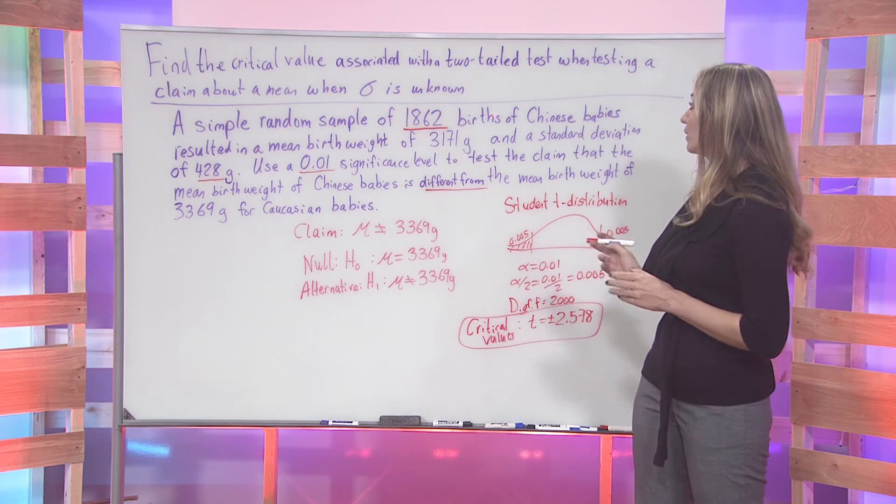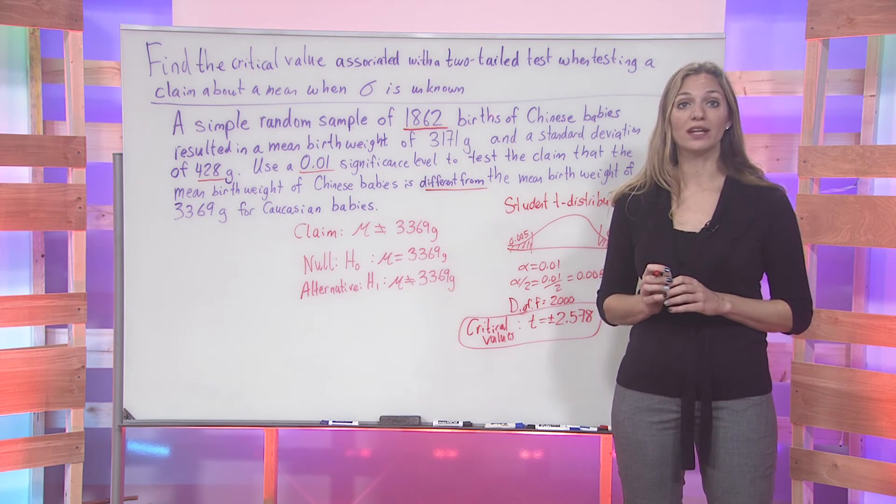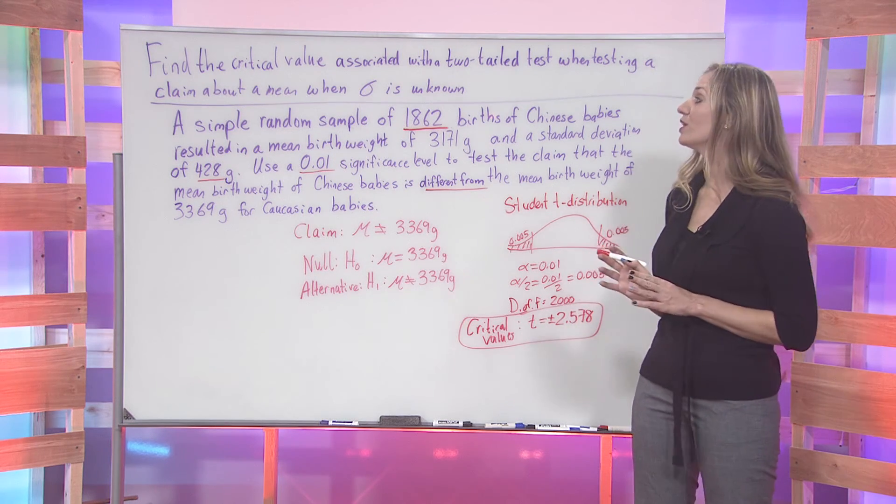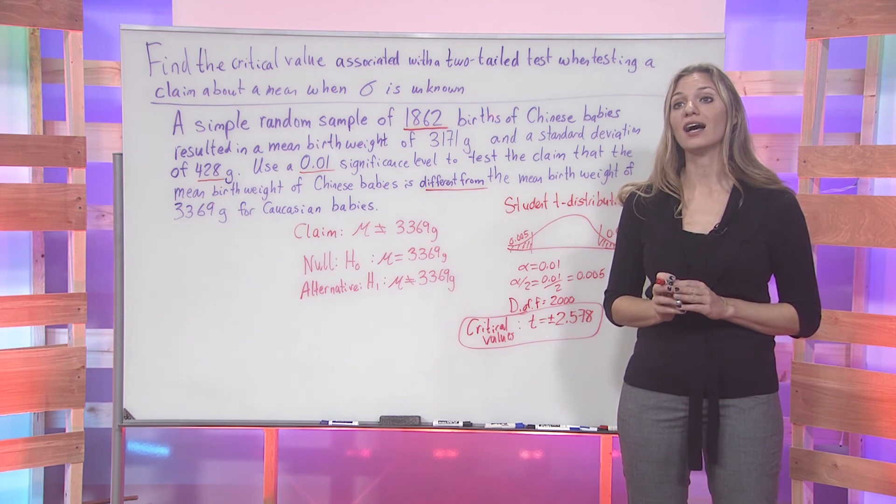Thus, we have found the critical value associated with a two-tailed test when testing a claim about a mean where sigma is unknown.